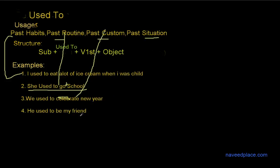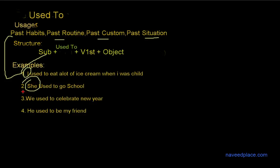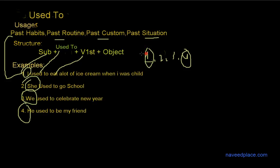Now let's see the structure of 'used to' again. The structure is: subject plus 'used to' plus first form verb plus object. Subject means 'who' — for example, I, she, we, he. These are called subjects. Then we have 'used to,' and we have the verb in first form. How many forms of a verb do we have? We have four forms: first form, second form, third form, and fourth form. Here we are using the first form.